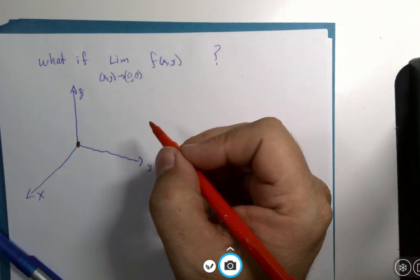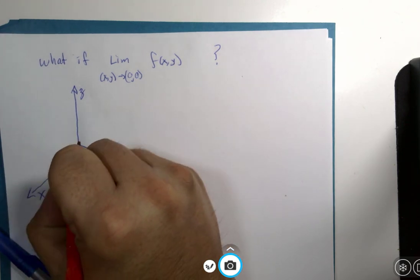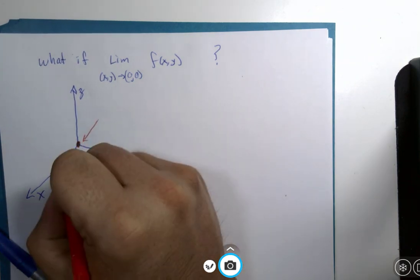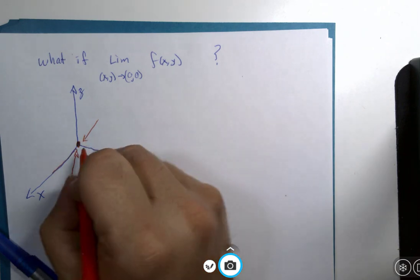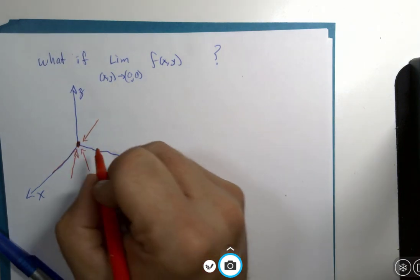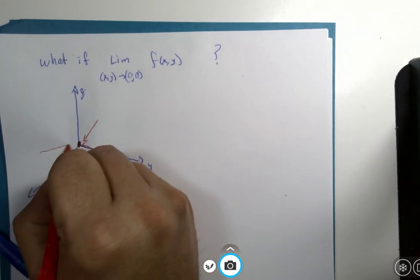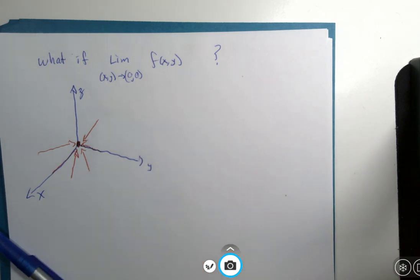we had two choices with single variable calculus. I could approach from here and I could approach from here. But what if I approach from this direction? Or what if I approach from this direction? Or from along the y axis? Or from back over here? You see me compounding our issues?